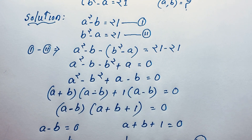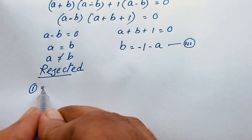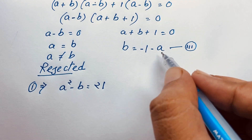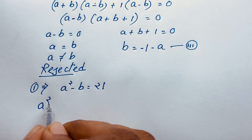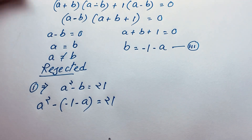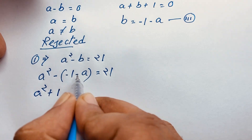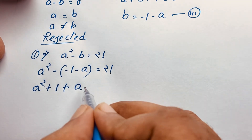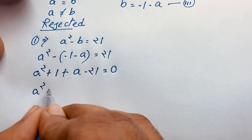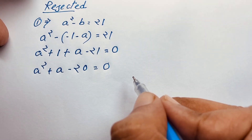Now recall our first equation: a squared minus b equals 21. Since b equals minus 1 minus a, I substitute: a squared minus (minus 1 minus a) equals 21, which gives a squared plus 1 plus a equals 21, and moving 21 to the left: a squared plus a minus 20 equals 0. We have a nice quadratic equation.